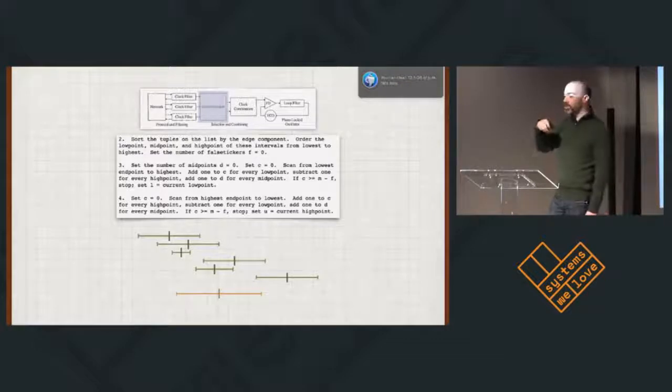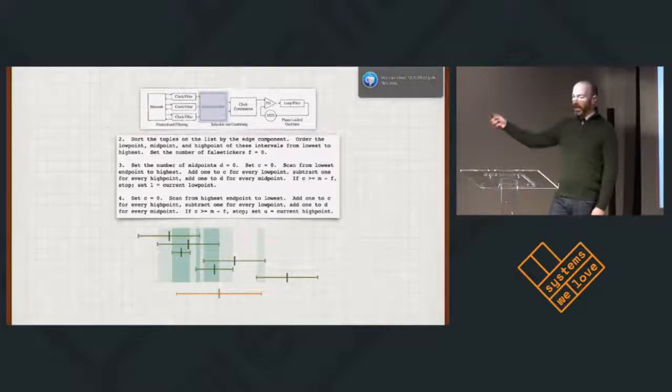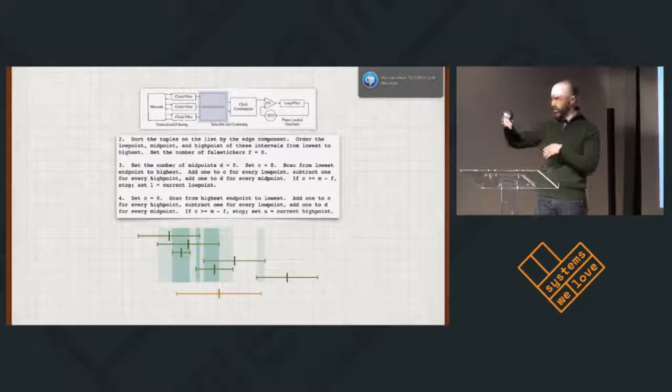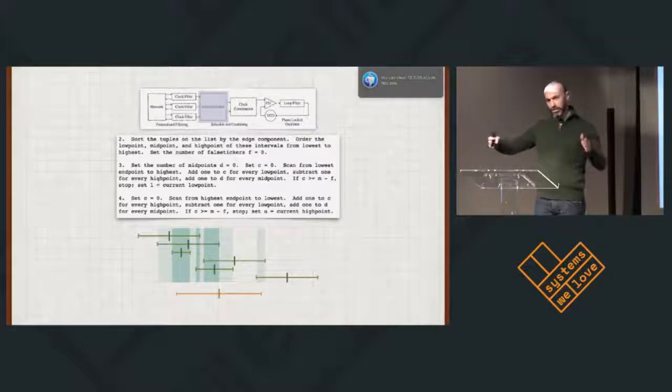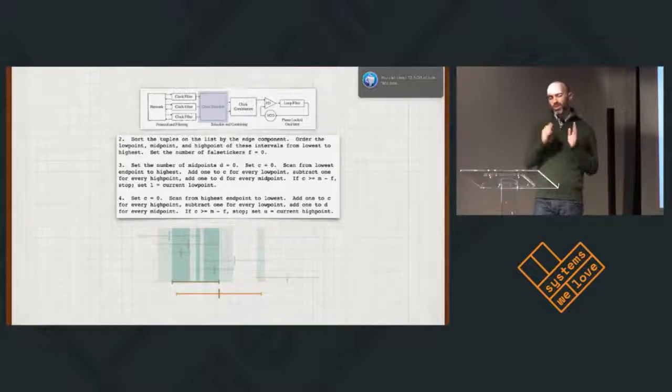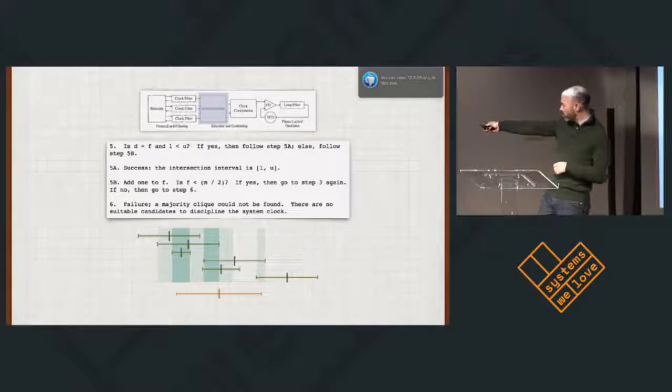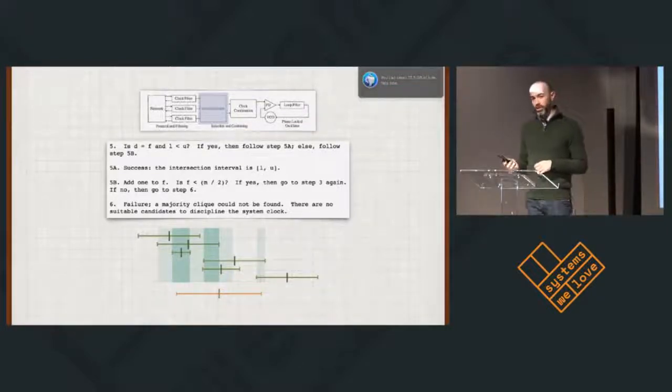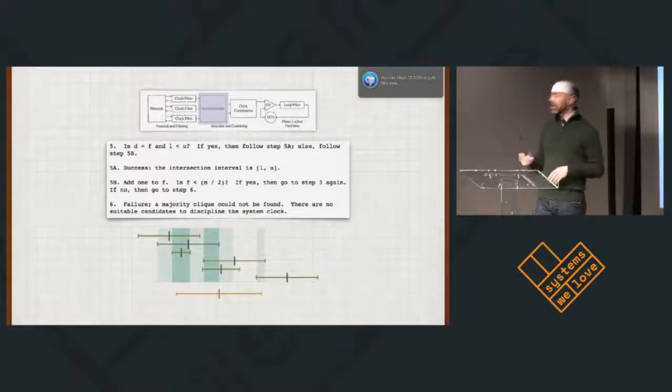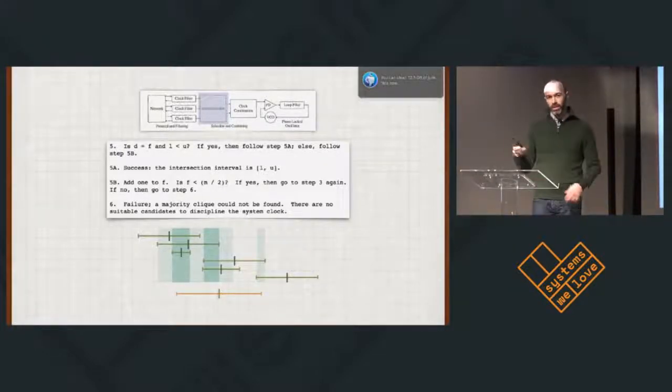But back to NTP. We said it used a modified version of Marzullo's algorithm. And it starts the same way. It finds the overlapping regions with the highest agreement and makes sure they're above our threshold. But instead of just using that closure as our error, and the time in the middle as the time, we use that closure as the region to choose which samples to actually use in the next stage. So any samples that have a time in this region, we will go ahead and use. And that's important because if we move that bottom sample just a little bit to the right, Marzullo's algorithm gives us the exact same answer because the closure in the middle is in the same place. NTP would give us a different answer because the center of that time is no longer within the region that we consider the agreement.